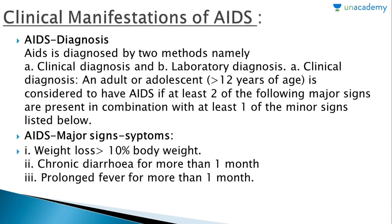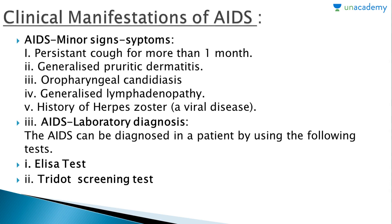AIDS is diagnosed by two methods: clinical diagnosis and laboratory diagnosis. In clinical diagnosis, an adult or adolescent greater than 12 years of age is considered to have AIDS if at least two of the following major signs are present in combination with at least one minor sign. Major signs include: weight loss of more than 10 percent, chronic diarrhea for more than one month, or prolonged fever for more than one month. Minor signs include: persistent cough for more than one month, generalized pruritic dermatitis, oropharyngeal candidiasis, generalized lymphadenopathy, and history of herpes zoster.